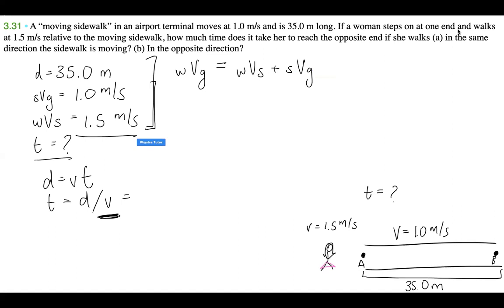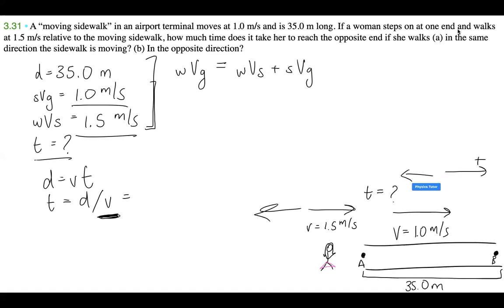But it's not that simple, because we don't know which direction she's walking in yet. What we do know is that the sidewalk is moving in some direction, and she could be going along it or opposite to it. So we need to set up a coordinate system. Let's say this direction is positive and the opposite is negative. The sidewalk is moving in the positive direction, and she could be moving positive along with the sidewalk, or negative against the sidewalk.